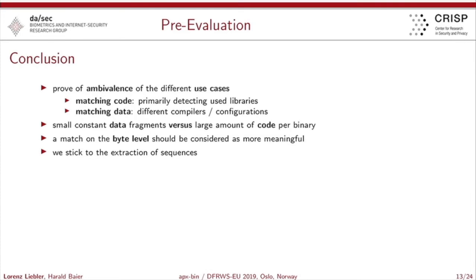The pre-evaluation showed us that there is ambivalence. On the one hand, we want to match code fragments — primarily useful for detecting libraries. On the other hand, we must also match data for different compilers and different configuration settings. Small constant data fragments are always a problem inside a binary because they are much less frequent than code fragments. A match on the byte level should be considered more meaningful, and we stick to extracting sequences in the context-triggered piecewise hashing domain.